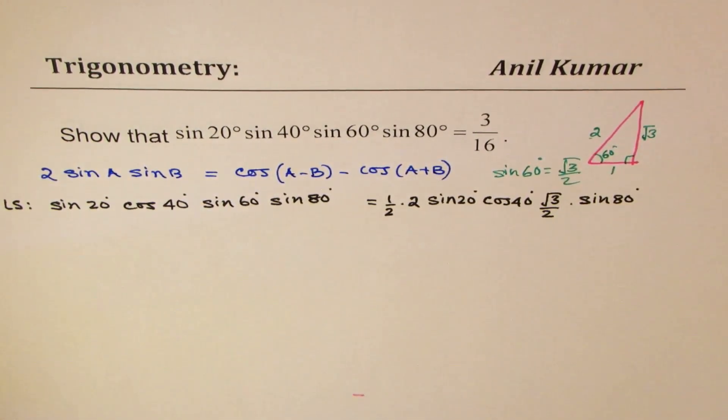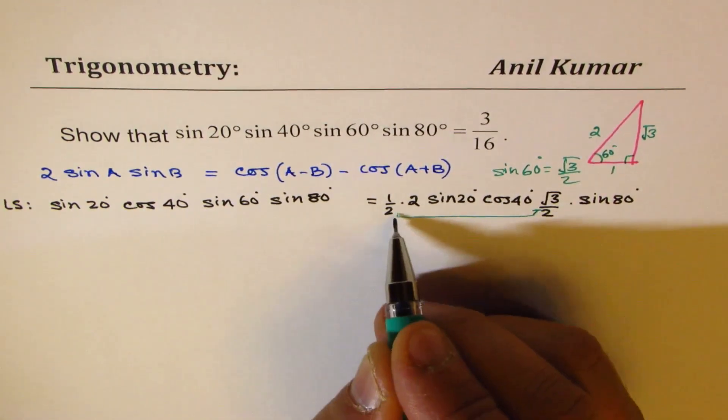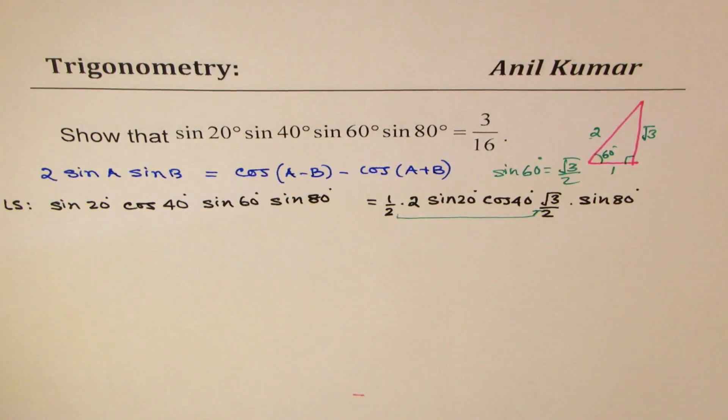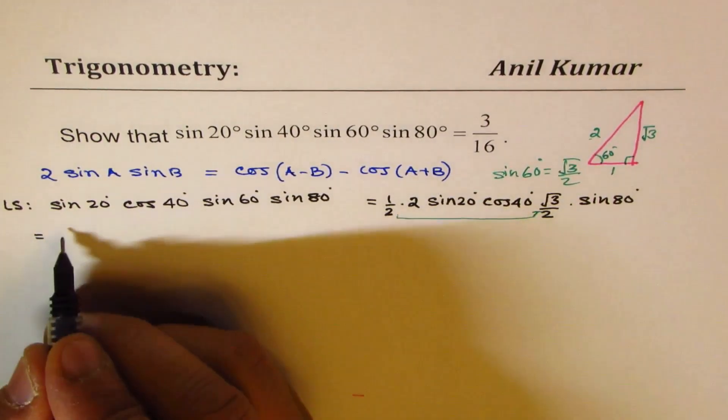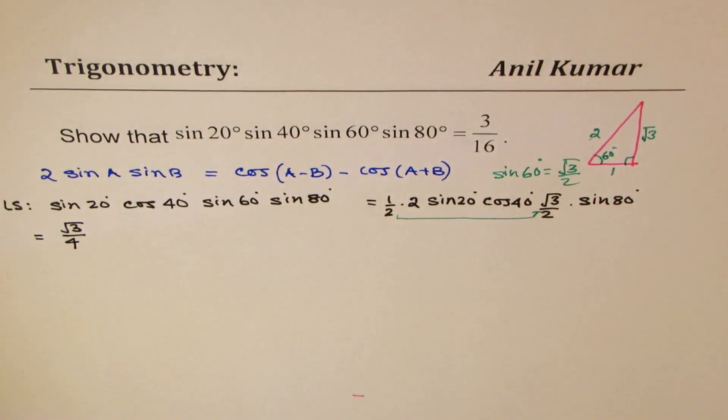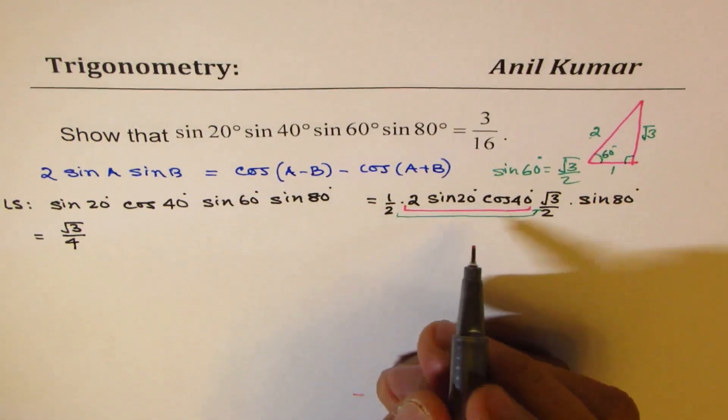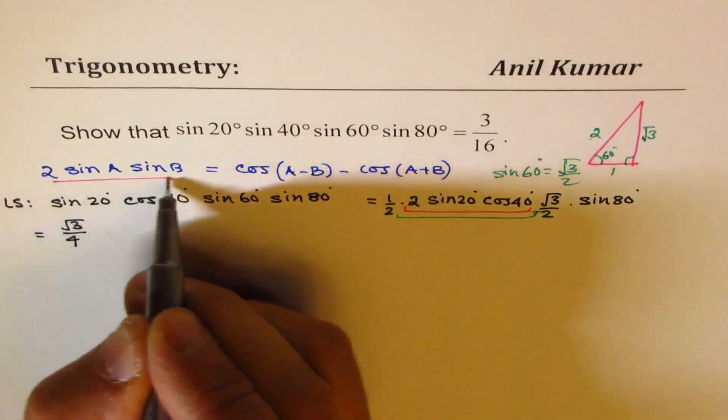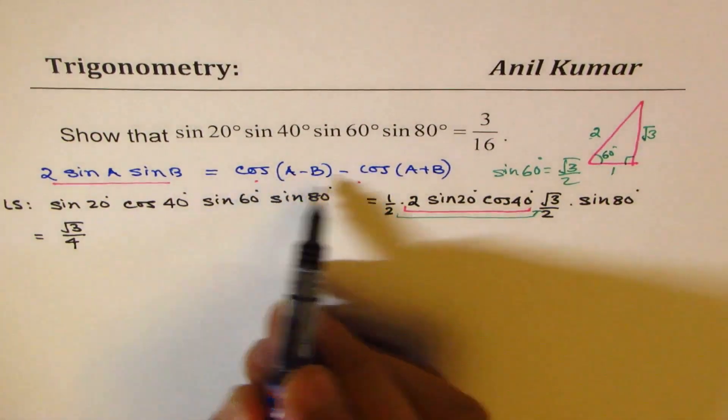Now in the next step, I'll multiply these two. And write it as √3 over 4. And I will substitute the formula here, this formula. So as difference of this.